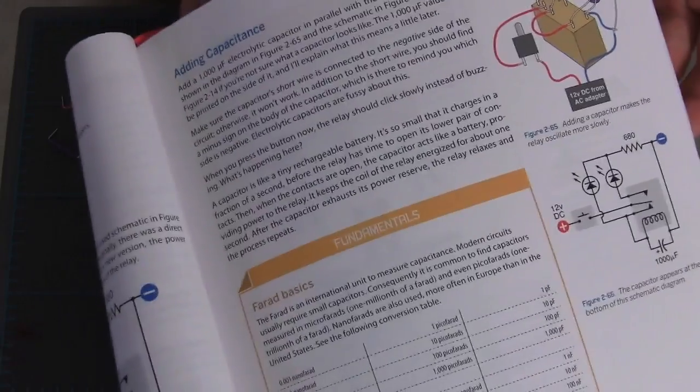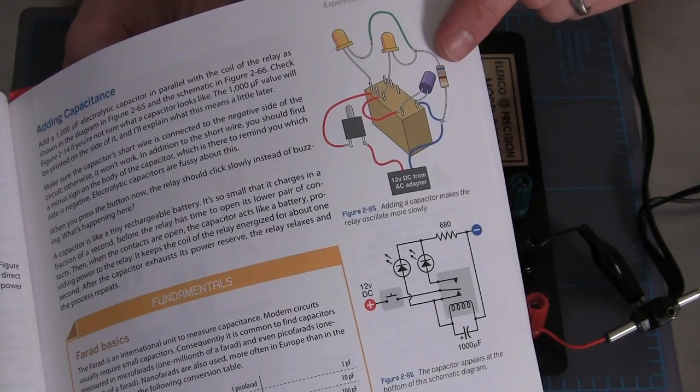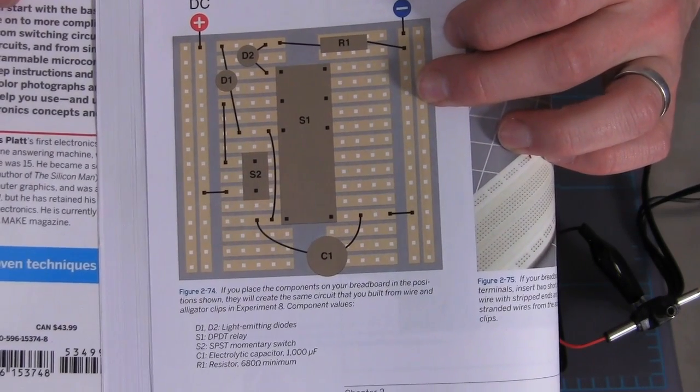So here I've got the schematic, and this is the freeform version of the circuit that we're going to do. Or if you want to cheat and jump ahead, here is what it looks like laid out on the breadboard. So that's the circuit I'm going to put together now.